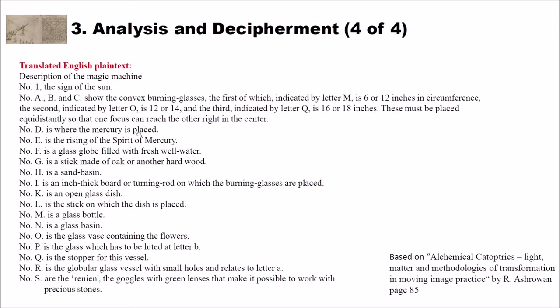And now you have a description of all the other parts of the image that we have seen. So number D is where the Mercury is placed. Number E is rising of the spirit of Mercury. Number F is a glass globe filled and so on and so forth. For me, the interesting part was, and as you know, I can, of course, understand the German text.